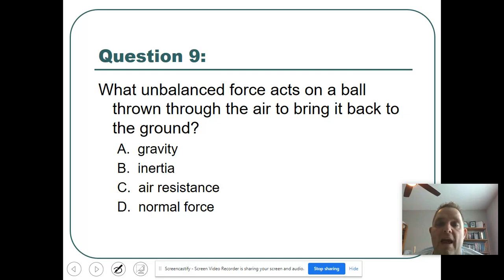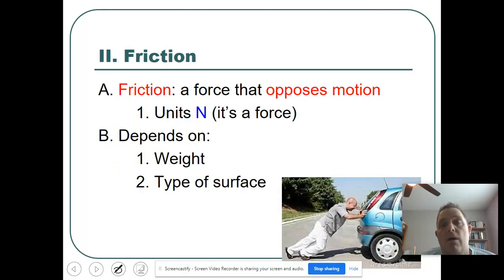What unbalanced force acts on a ball thrown through the air to bring it back down to the ground? Well, we really just talked about this one. See if you can get it. Yep. Oh, it's not air resistance. Sorry, I was circling the wrong one. It is gravity. That is bringing it back down to the ground. So we talked about air resistance is slowing it down, and gravity is what's bringing it back down. All right.